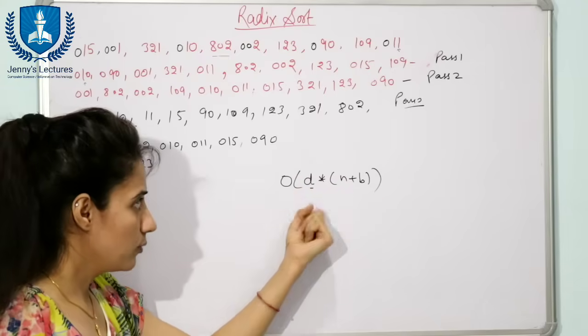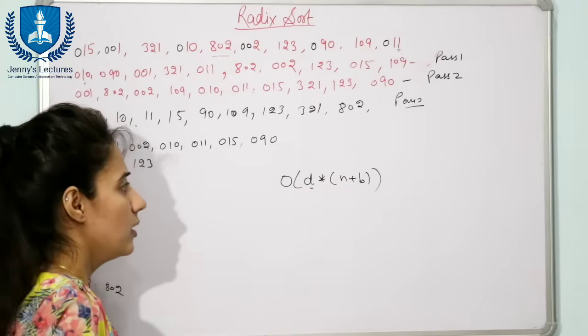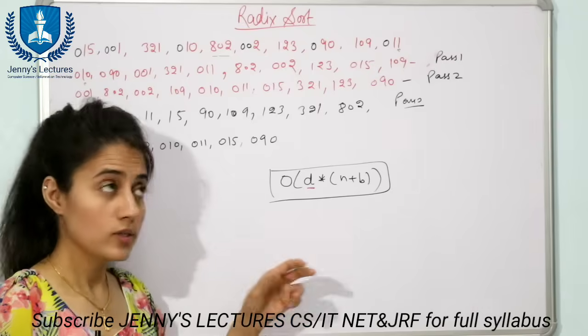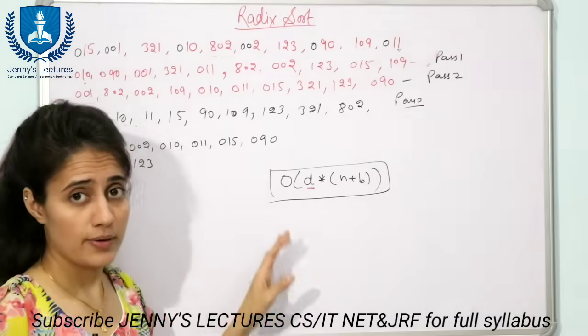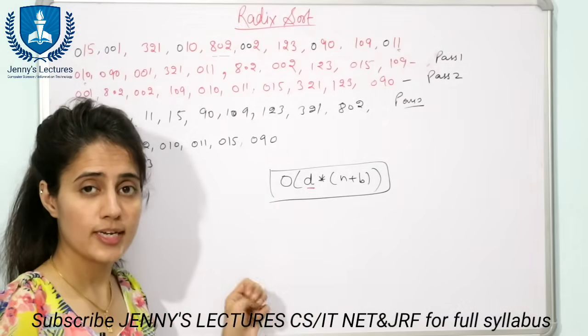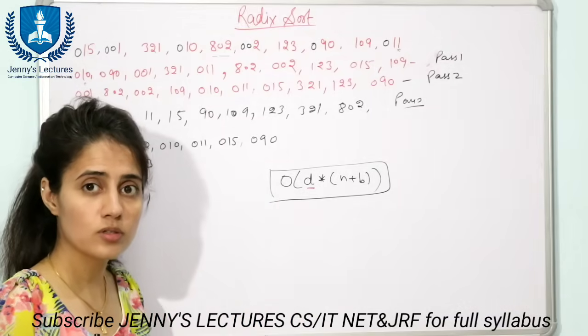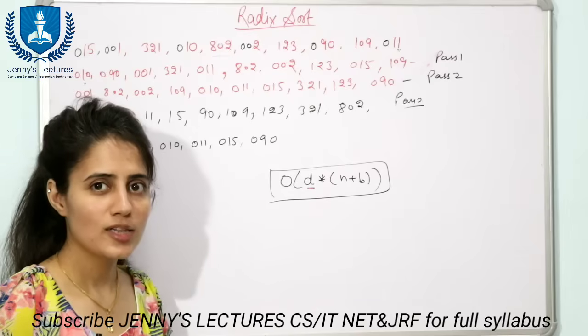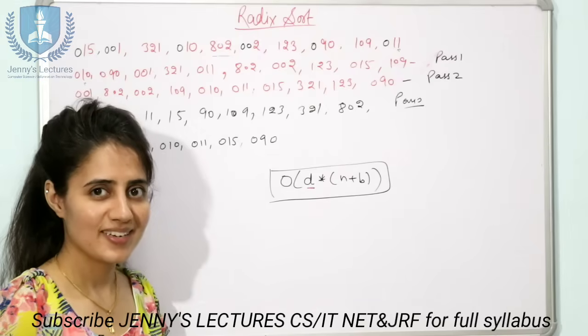So this is the time complexity. This is all about Radix Sort — also called bucket sort. In the next video we are going to discuss Shell Sort. Till then, bye bye, take care.